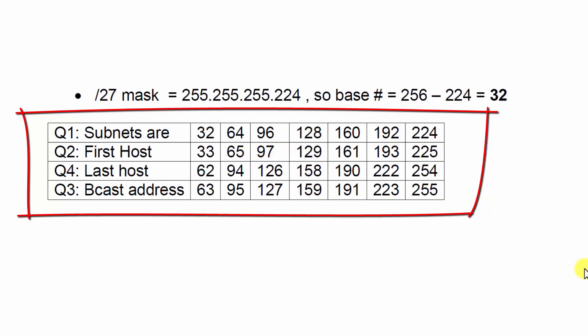Now, the last host, which is question four, we're actually going to see the broadcast address first. You can see that the broadcast address is actually one number less than the subnet. So, 64 minus 1 is 63. 96 minus 1 is 95. 128 minus 1 is 127, and so on.